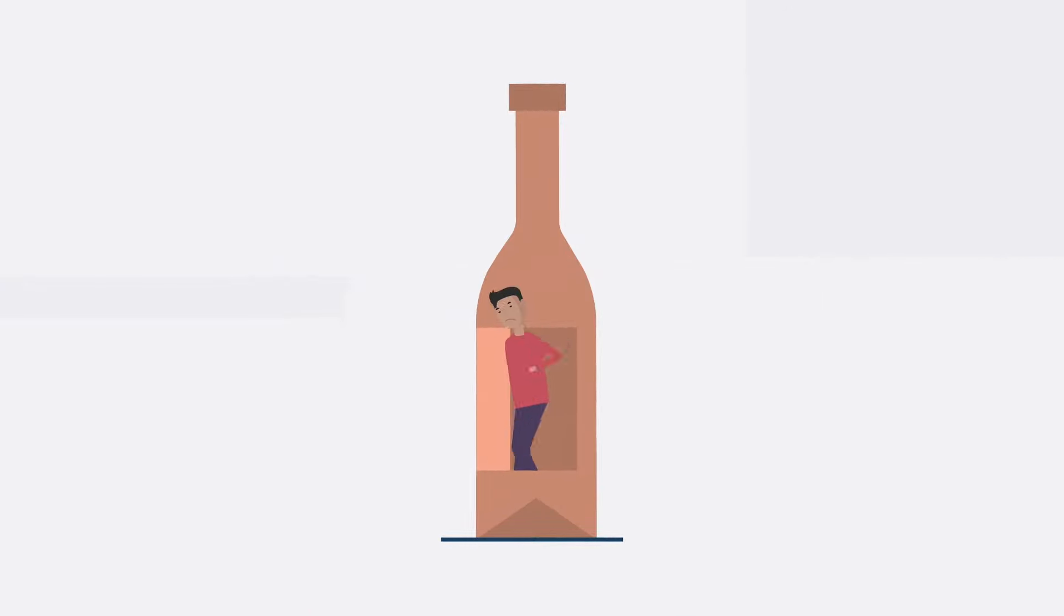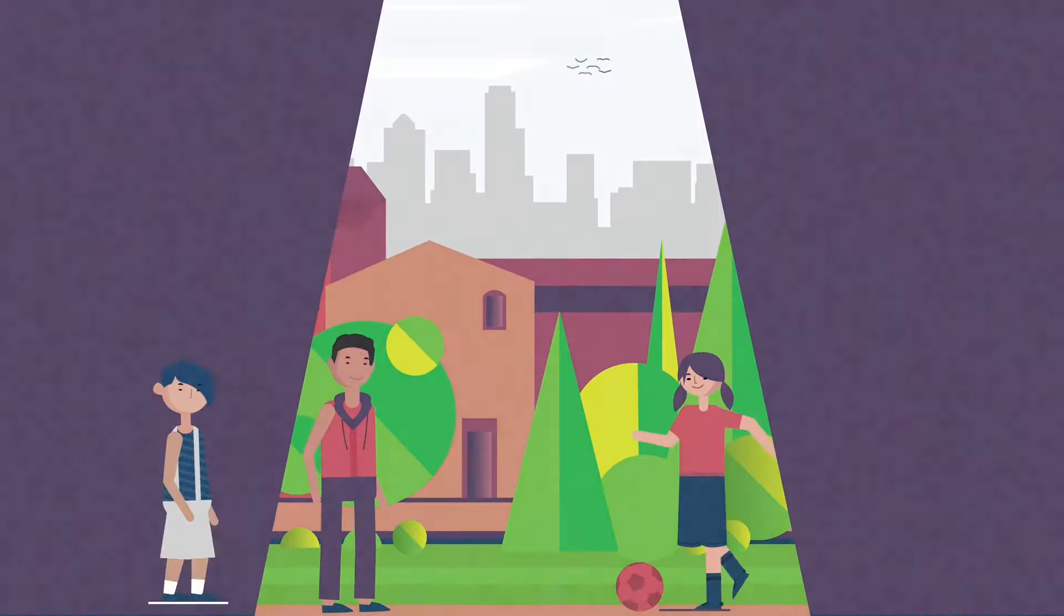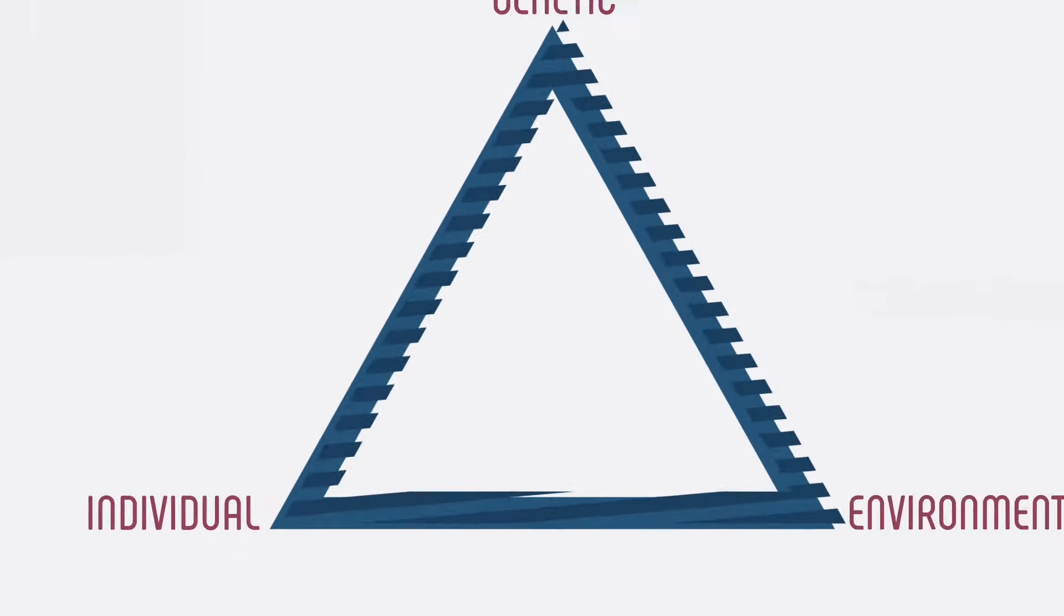Other factors that put an adolescent at risk besides the age of first use include caregiver substance misuse, trauma, and a lack of social attachments. These are called individual factors and they're part of the big three in preventing addiction.